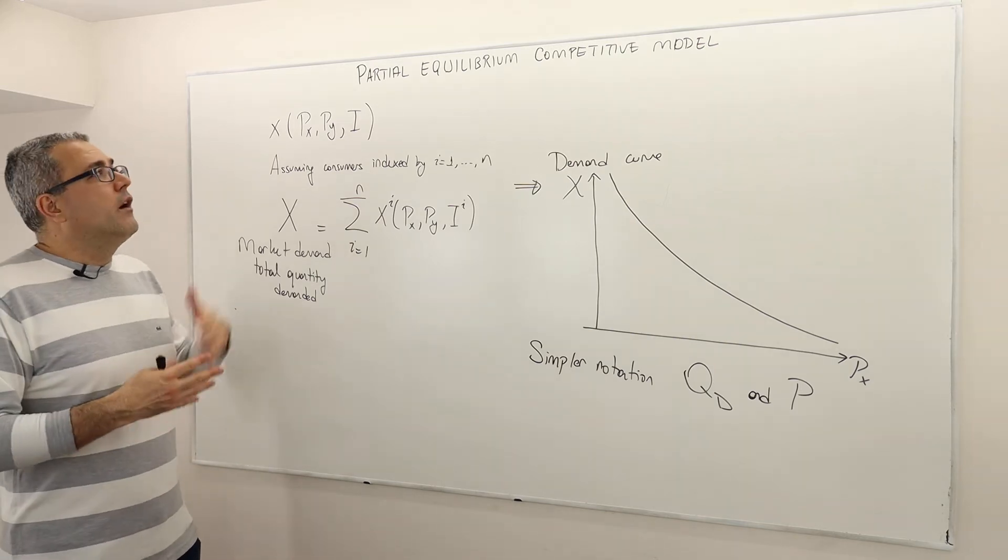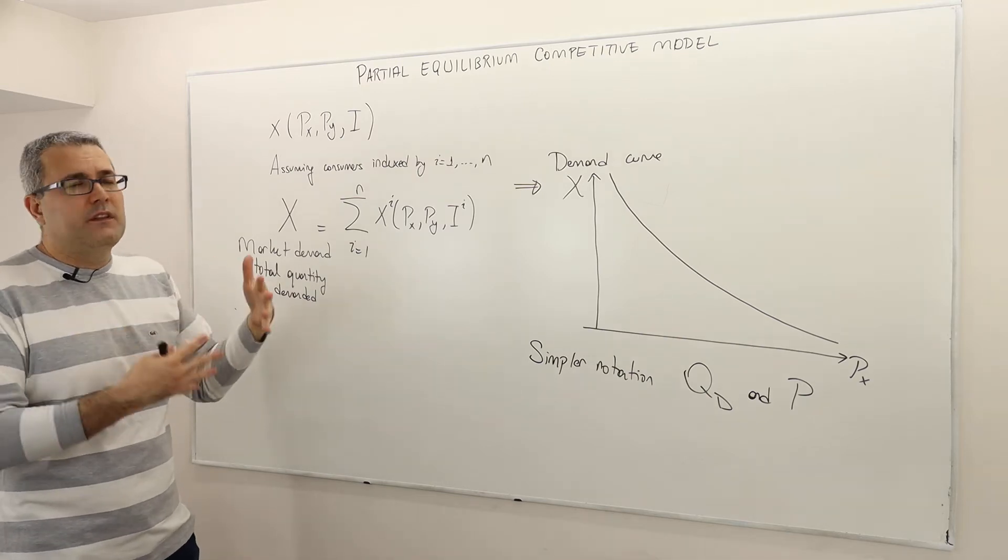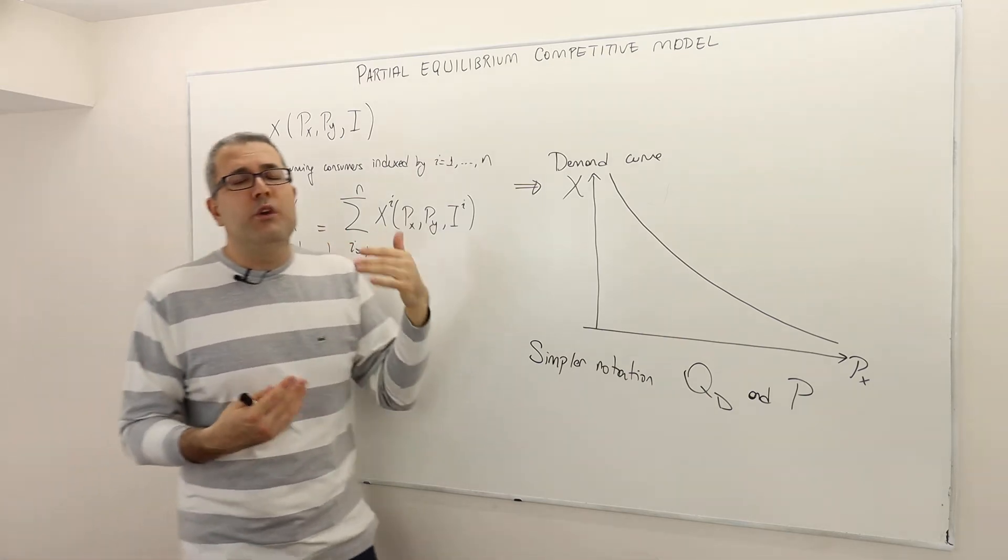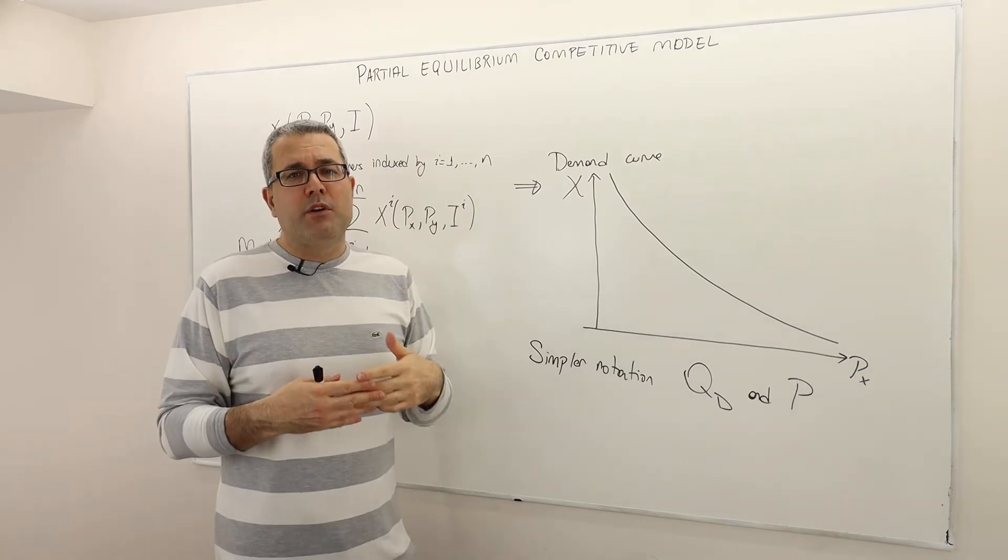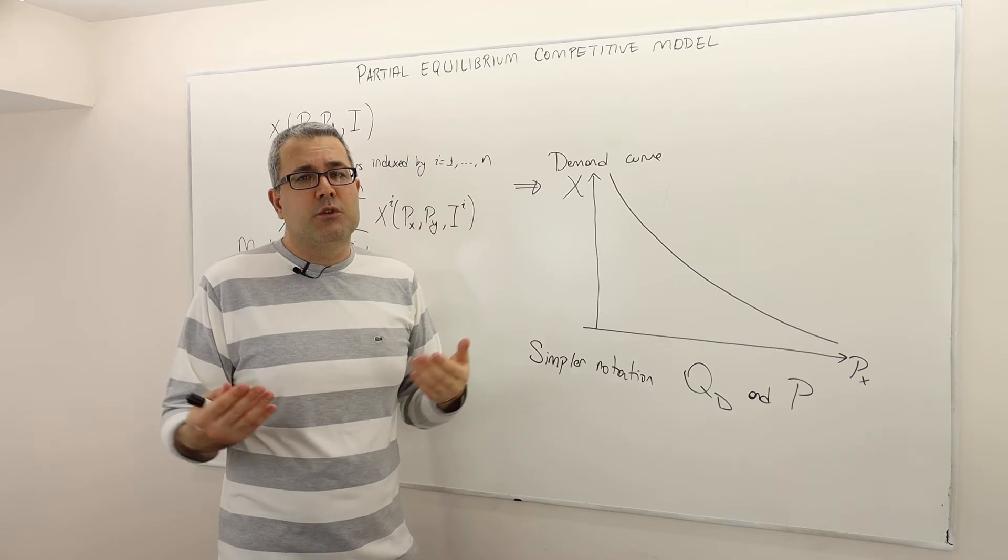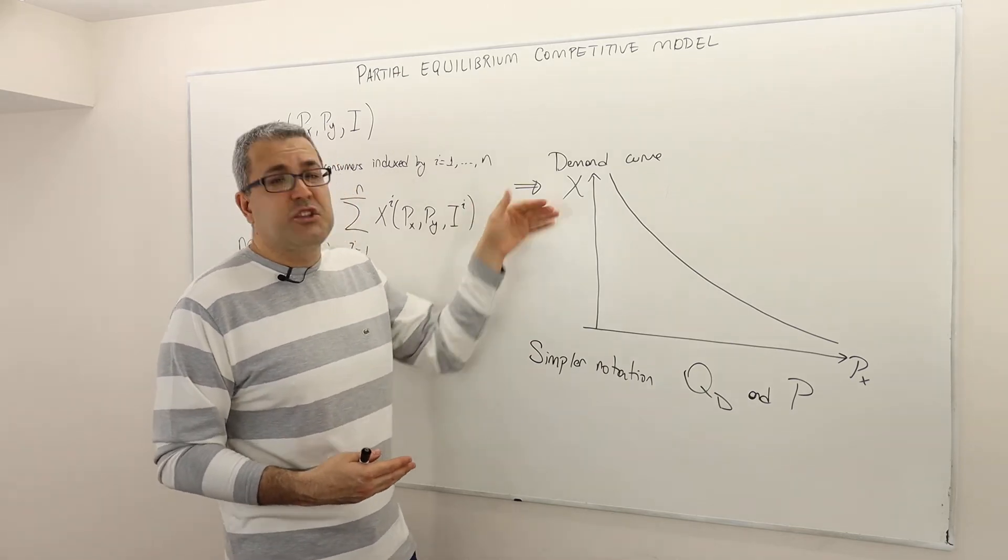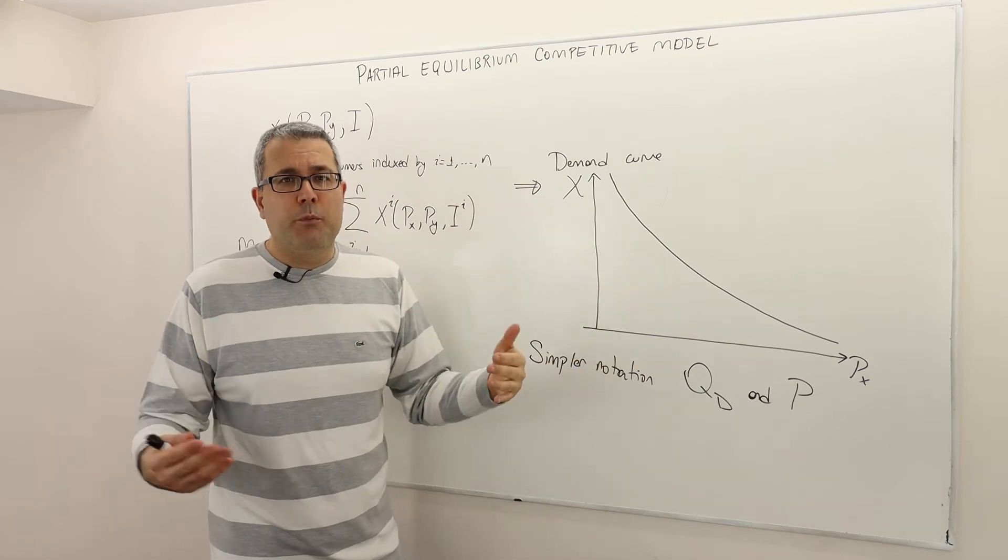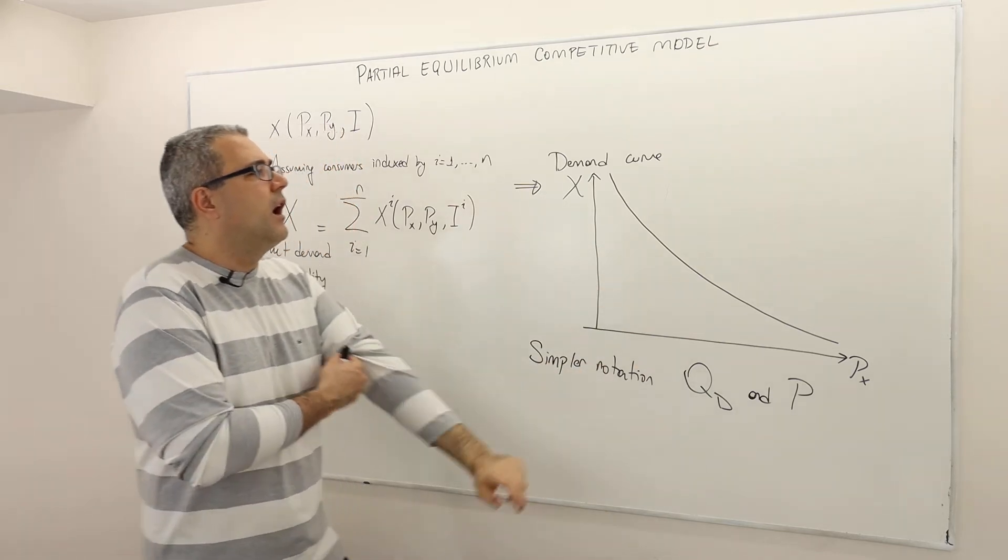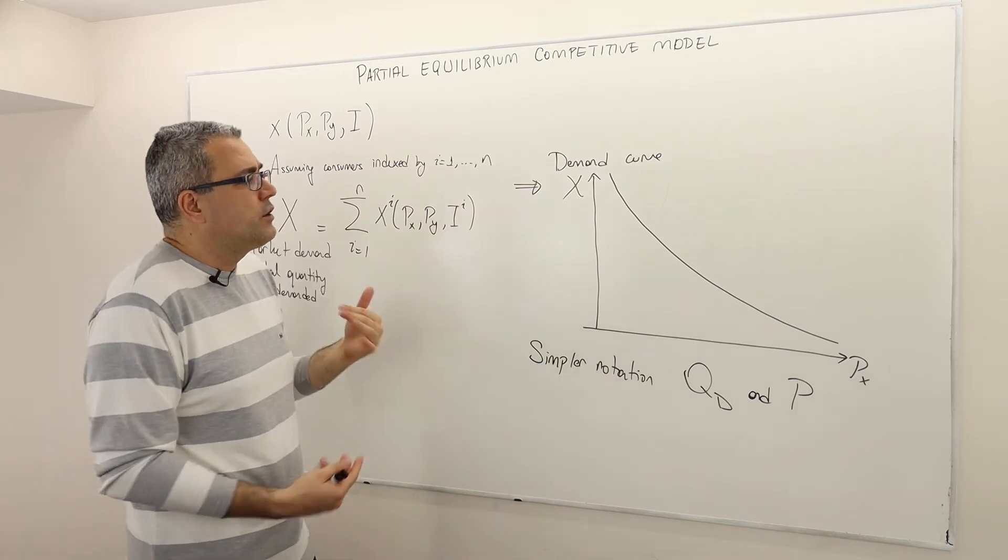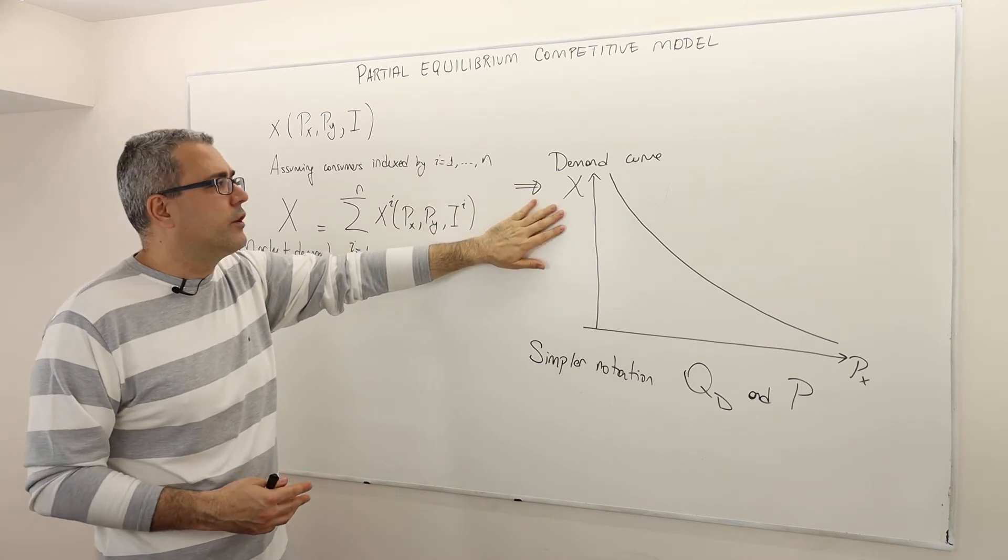So what we do for our partial equilibrium analysis of the competitive market? We derive or we draw demand curves. Probably, you remember from the principles or intermediate micro courses that the demand curves are straight lines, downward sloping. We previously talked about how to derive the demand curve, individual demand curve. So what we do, basically, we just extend this idea to the market demand curve.